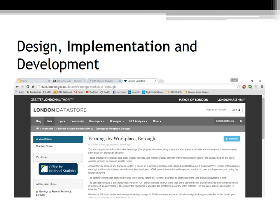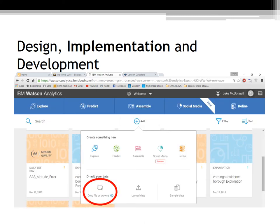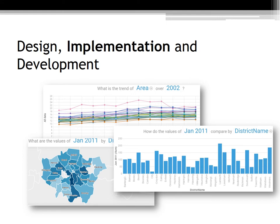The datasets were first found on data.london.gov.uk, then cleansed — a process described in depth in the development section of this presentation — and then imported into Watson Analytics. Different views were trialled until the best visual representations were decided upon. The process involves logging on to IBM Watson Analytics, clicking on the add button, and simply dropping a file or browsing your computer to find it and import it. Watson Analytics refers to these views as 'explorations'.